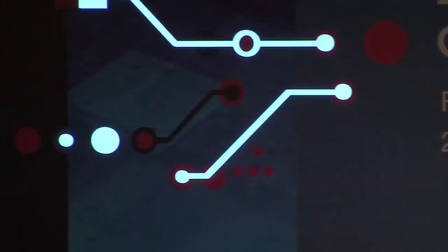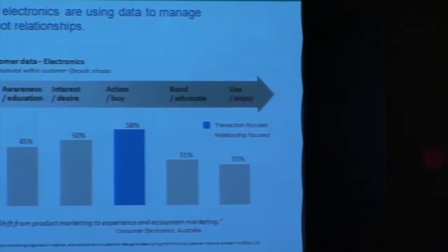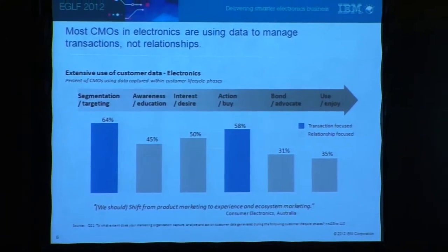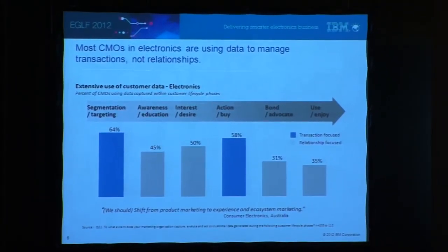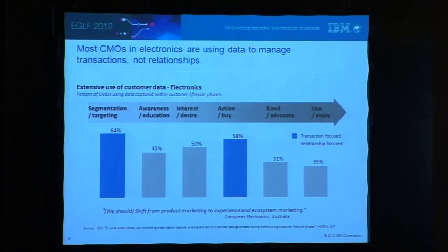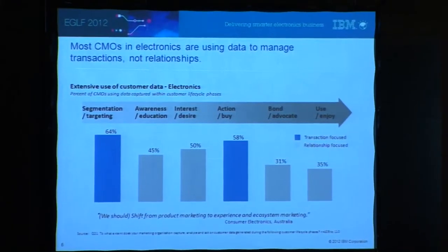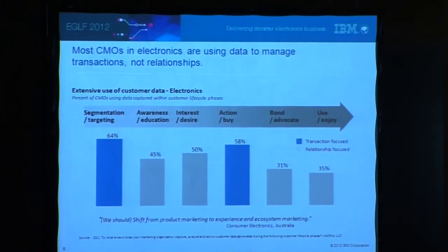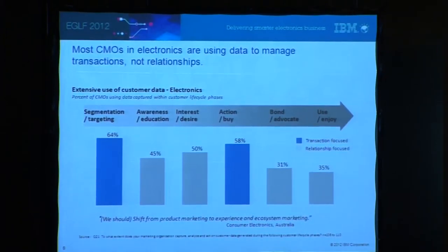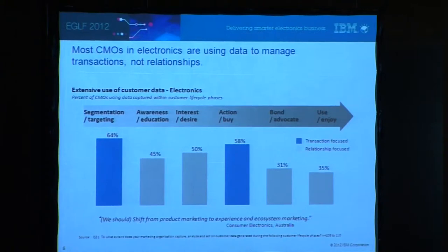Marketing is one of the most ripe opportunities for improvement. The data we've gathered shows that most CMOs in the electronics industry basically focus on the data they have when doing segmentation of their customer base and when doing transactions — the act of buying. But there's a lot of opportunity to improve the benefit we get from areas of awareness, interest, building advocacy, and being able to interact with the customer as they use and enjoy our product. There's a lot of data that exists in our companies, and capitalizing on that through big data creates a lot of opportunity.